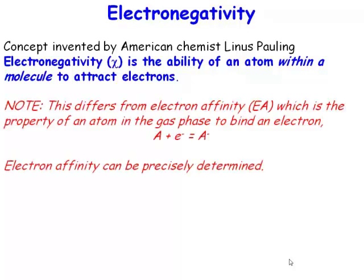Now that's in contrast to a different property which is known as electron affinity. These things are not completely unrelated, but one is the ability of something to attract electrons towards itself in a covalent compound. The other one is a discrete, experimentally measurable quantity.